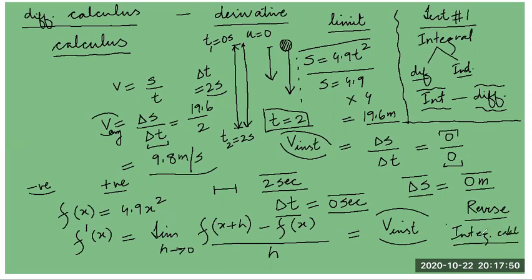So what is the reverse? If at different points of time the instantaneous velocity is given — say at 1 second, 1.1 second, 1.2 second, 2 seconds, 2.5 seconds — all instantaneous velocities are given, and my motivation is to find out the function: integration exactly does this. Differentiation helps me find instantaneous values; integration helps me find the function when the derivative of that function is given.